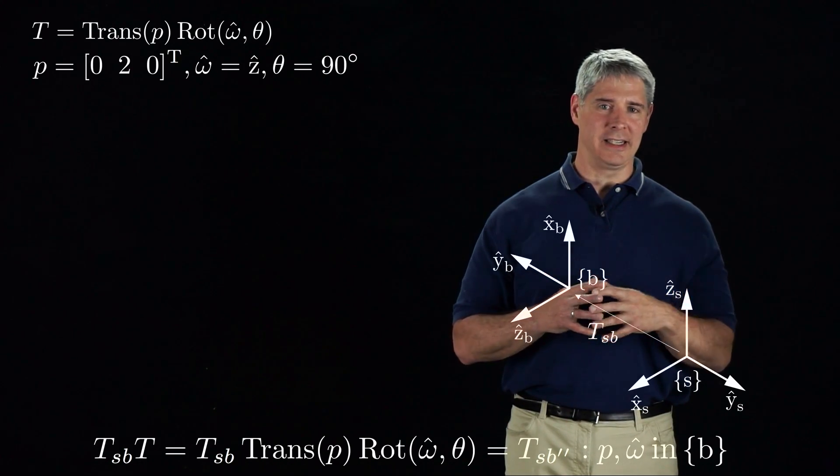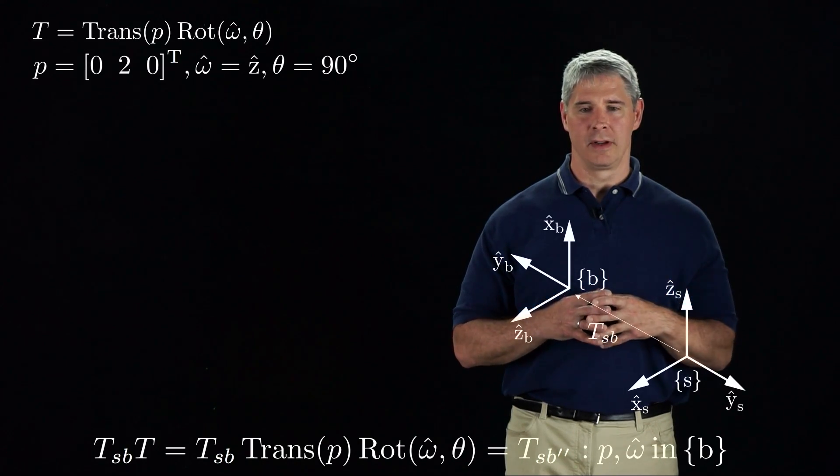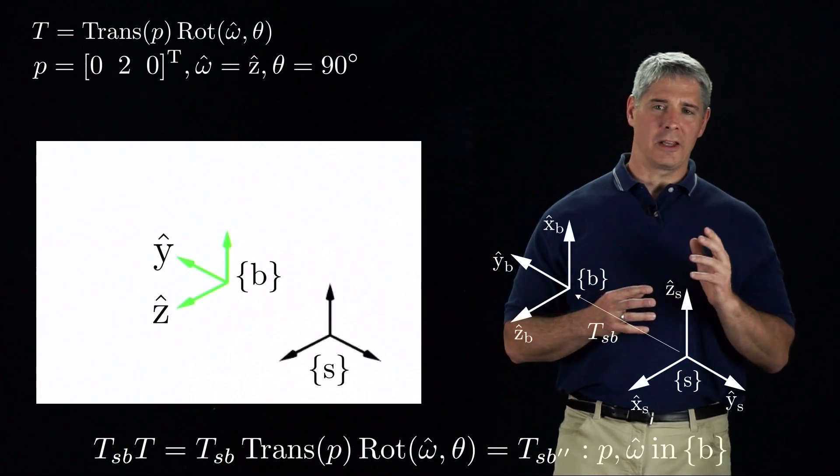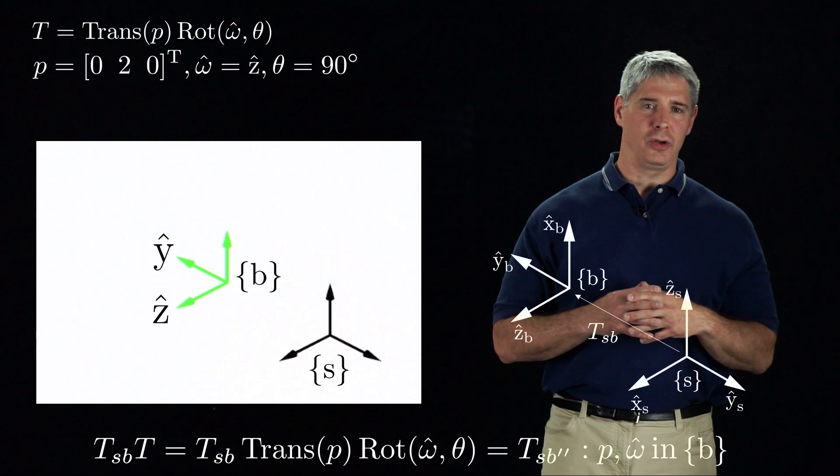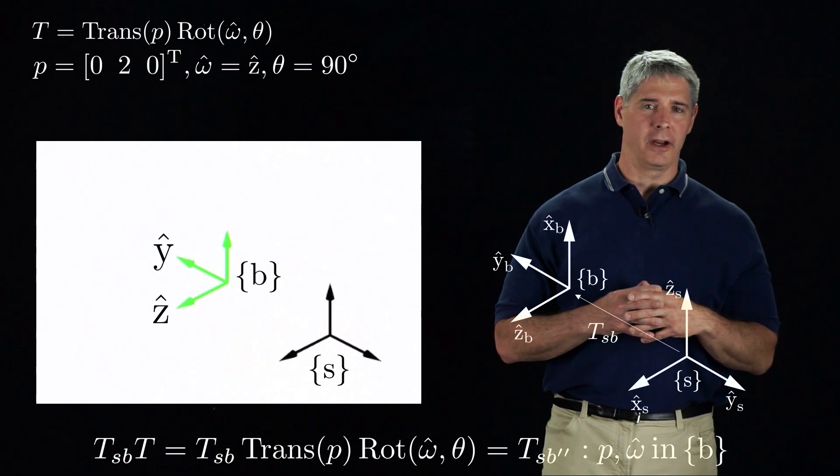First, we translate TSB, and then we rotate it. Let's animate the motion. Watch how the B-frame first translates by two units in the y-direction of the B-frame, then rotates about the z-axis of the B-frame.